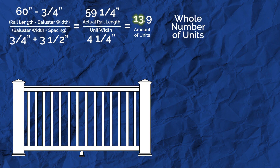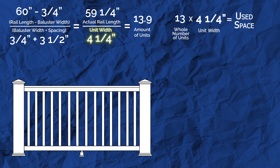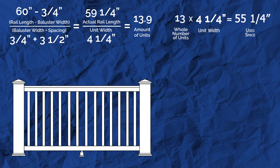Take the whole number from your result and multiply it by your unit width to determine the distance between the first and last baluster in the section. We'll refer to that distance as used space. In our example, our used space is 55 and a quarter inches.